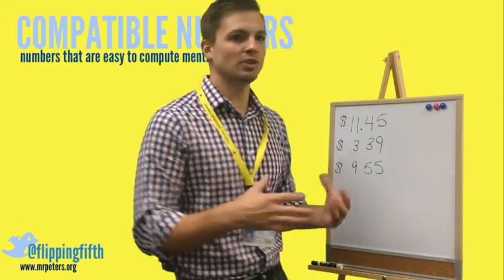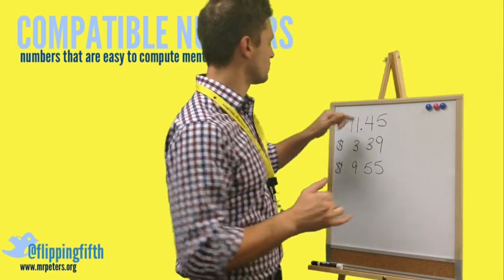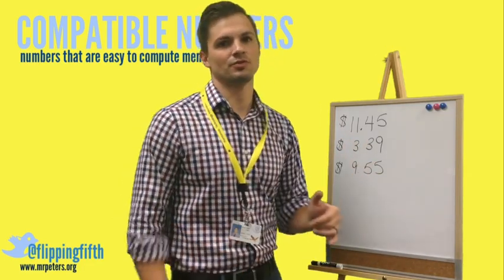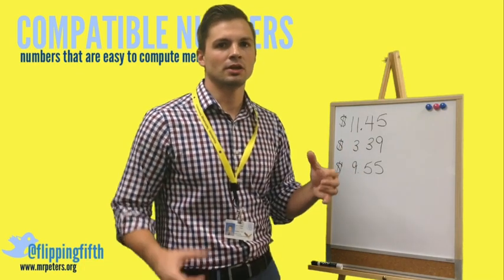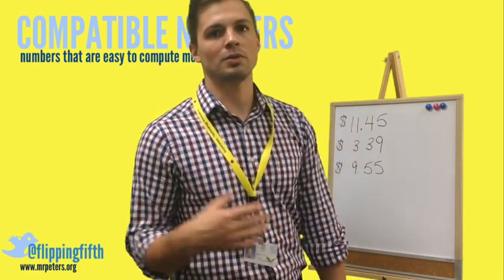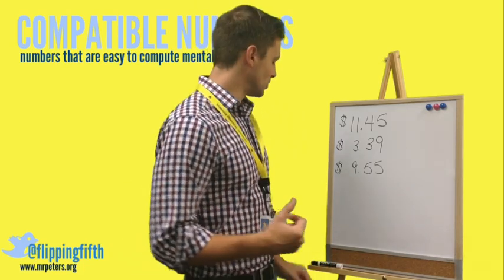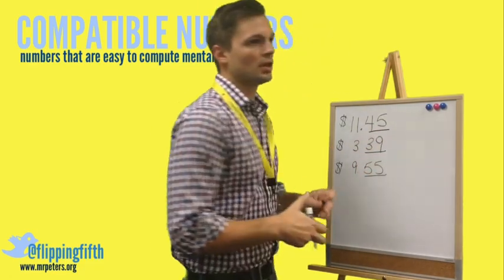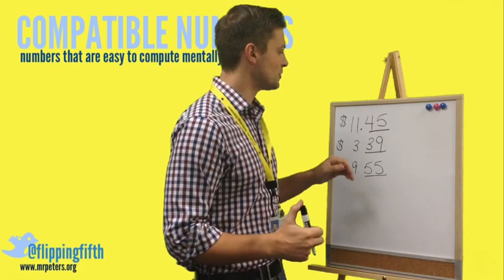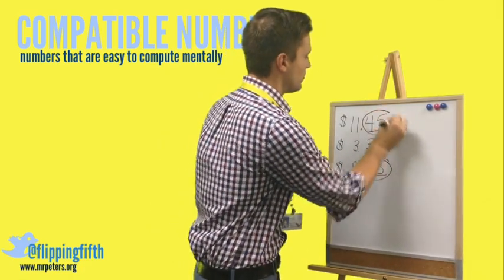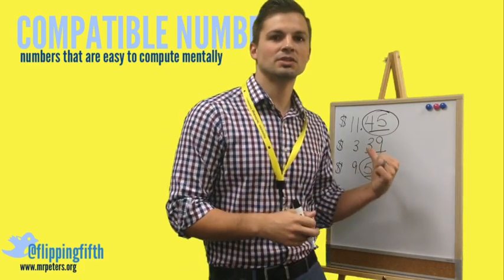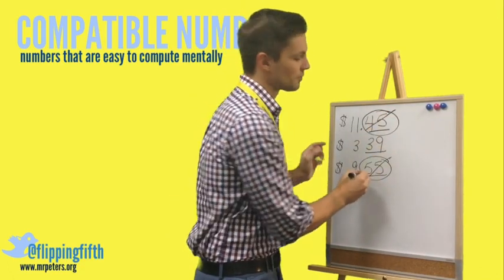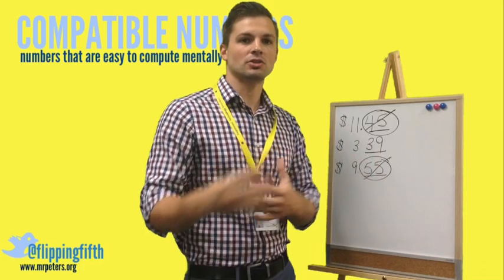Numbers that work really nicely together are called compatible numbers — they're easy to compute in your head. Let's look at three numbers: $11.45, $3.39, and $9.55. Which two of those are compatible? When looking for compatibility, look behind the decimal point. The decimal parts are 45, 39, and 55. The two that jump out are 55 and 45, because 55 plus 45 equals 100, and 100 cents is a dollar. So we cross those off and note that we gain a dollar.